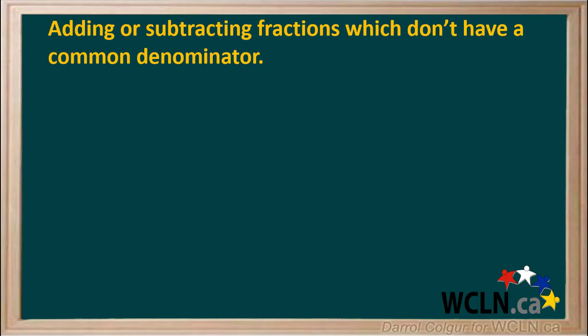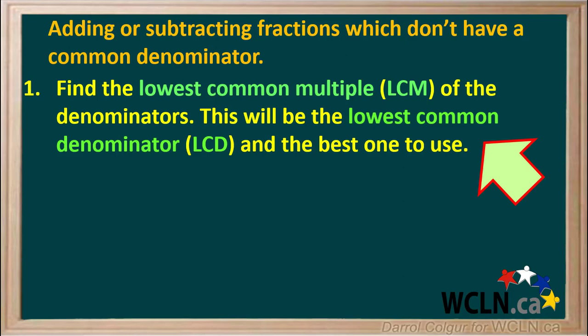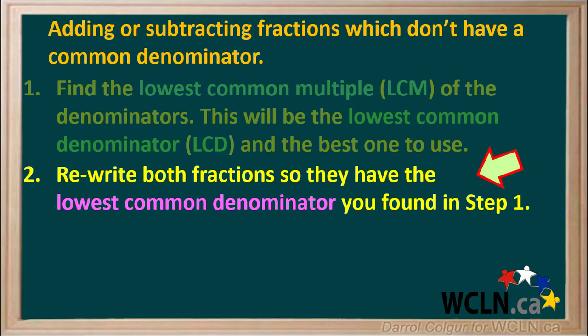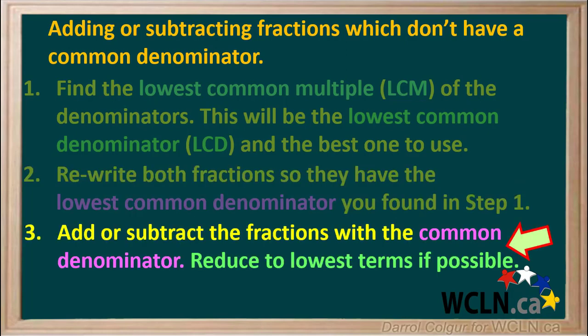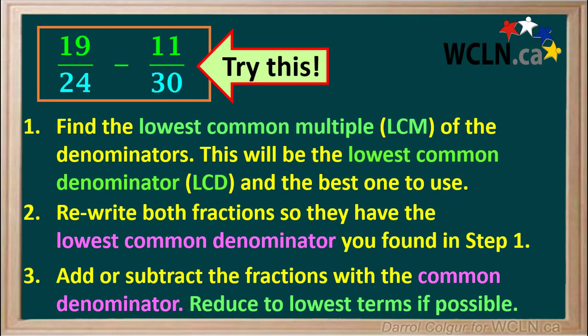So here we'll review the steps we can use for either adding or subtracting fractions which don't have a common denominator. First, we find the lowest common multiple of the denominators in our fractions, and this will be the lowest common denominator in the new fractions we create. Next, we rewrite both fractions so they have the lowest common denominator we found in step 1. Lastly, we add or subtract the fractions with the common denominator to get our final answer. If the final answer can be reduced to lower terms, we do so. Here is a question for you to try. Pause the video and go through the steps we outlined to obtain your answer. Then resume the video and check your answer.